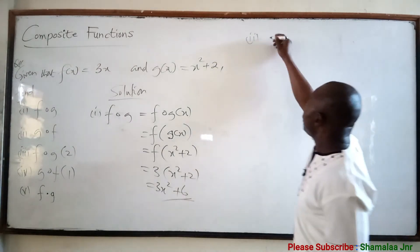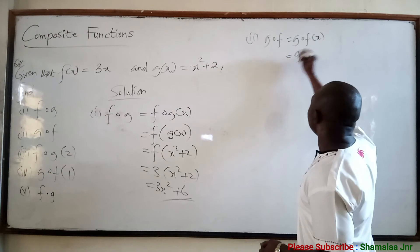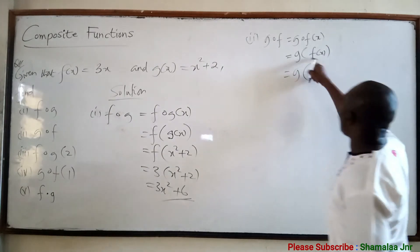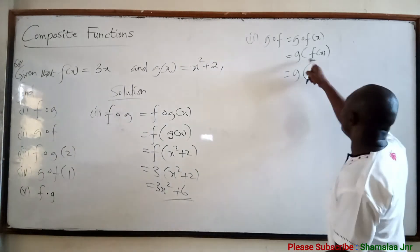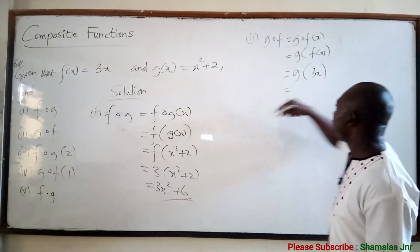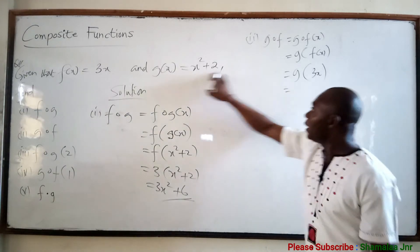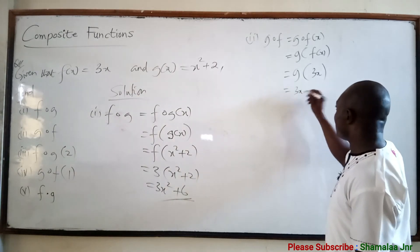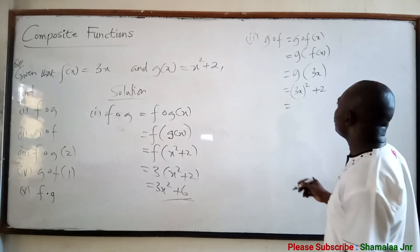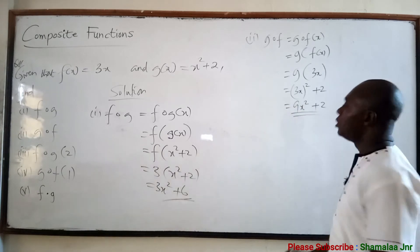Now to find g of f, which is the same as g of f of x. In place of f(x) we write 3x. So go to the g function — wherever you see x, write 3x. So g(f(x)) becomes (3x) squared plus 2. That is 9x squared plus 2, because 3 squared is 9. So g of f of x equals 9x squared plus 2.